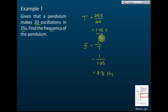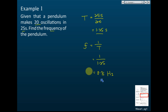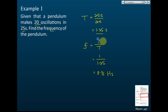Usually questions won't be direct. They will give you the number of oscillations and the time taken. From those, you find the period first, and from the period you find the frequency. It is very important to know the relationship between frequency and period given by the formula f equals 1 over T.